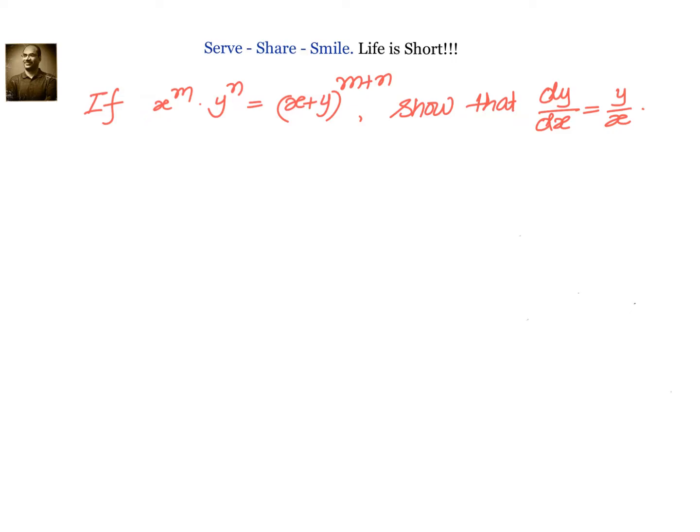If x power m into y power n is equals to x plus y whole to the power of m plus n, then show that dy by dx is equals to y by x.